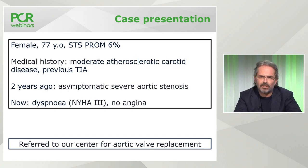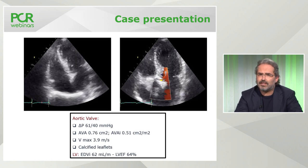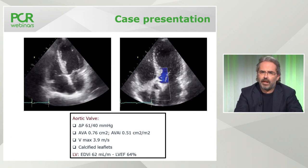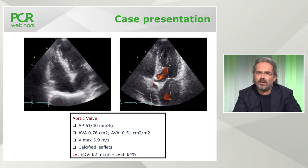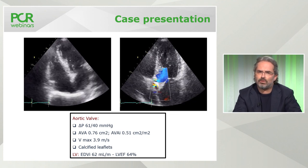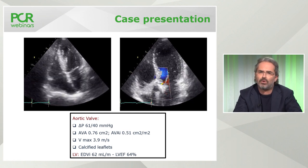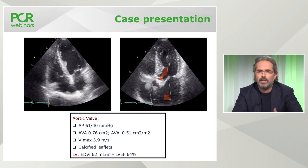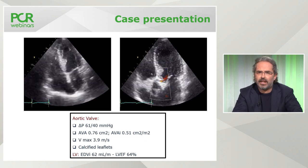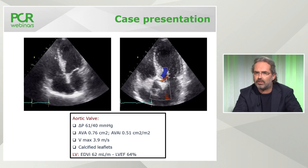The patient was admitted with dyspnea NYHA class 3, without any sign of angina. The echocardiogram clearly shows a calcific, hypomobile valve with a mean gradient of 40 mmHg. The aortic valve area is below 1 cm² and the indexed value is below 0.6. The leaflets are quite calcific and left ventricular dimensions and ejection fraction are normal.